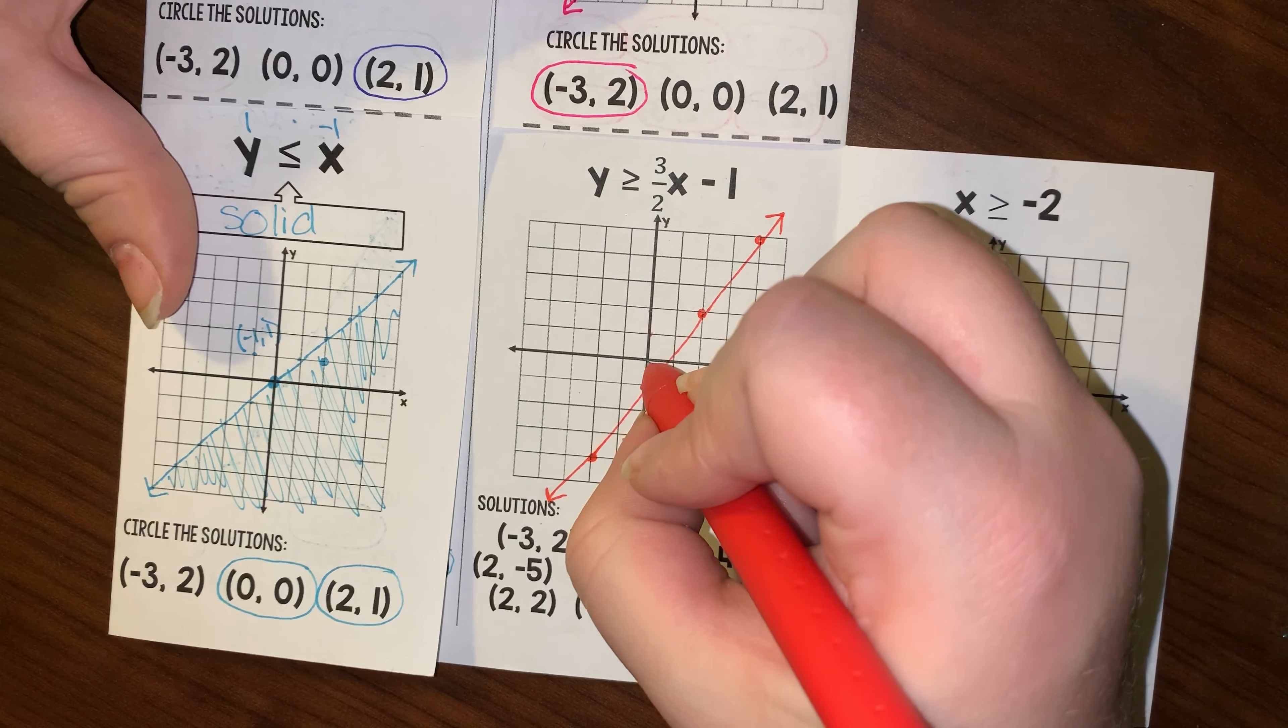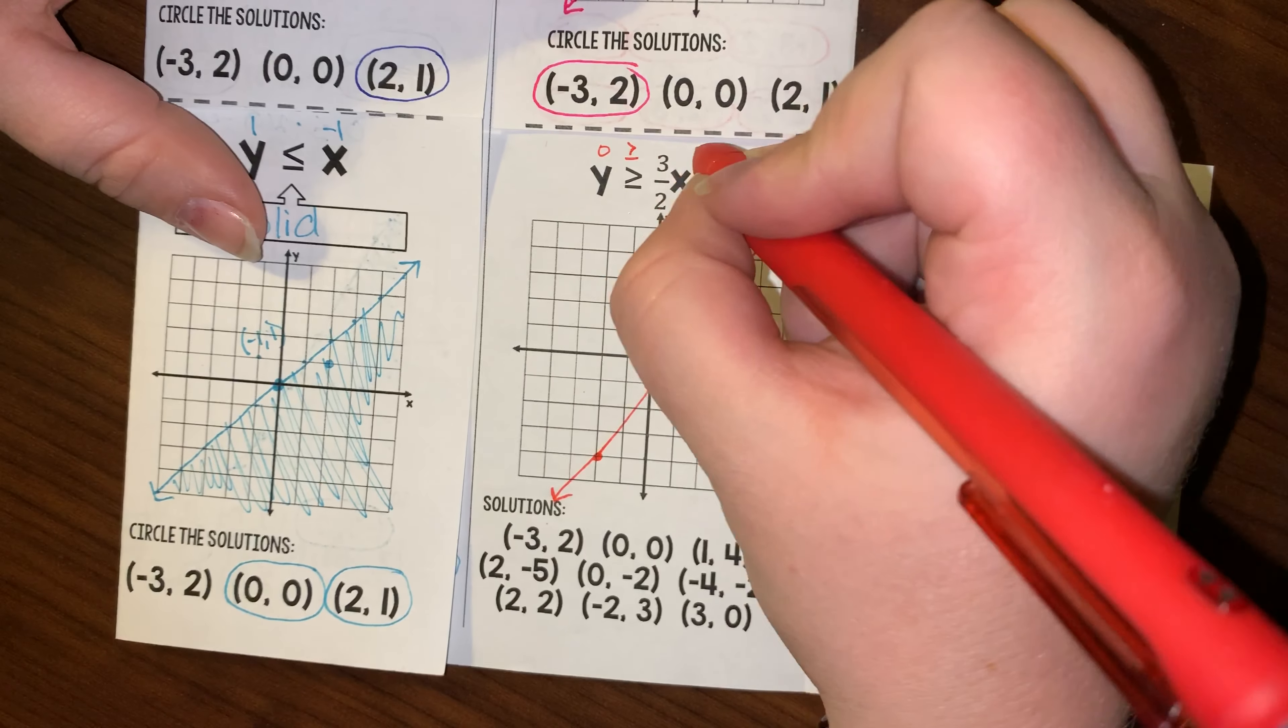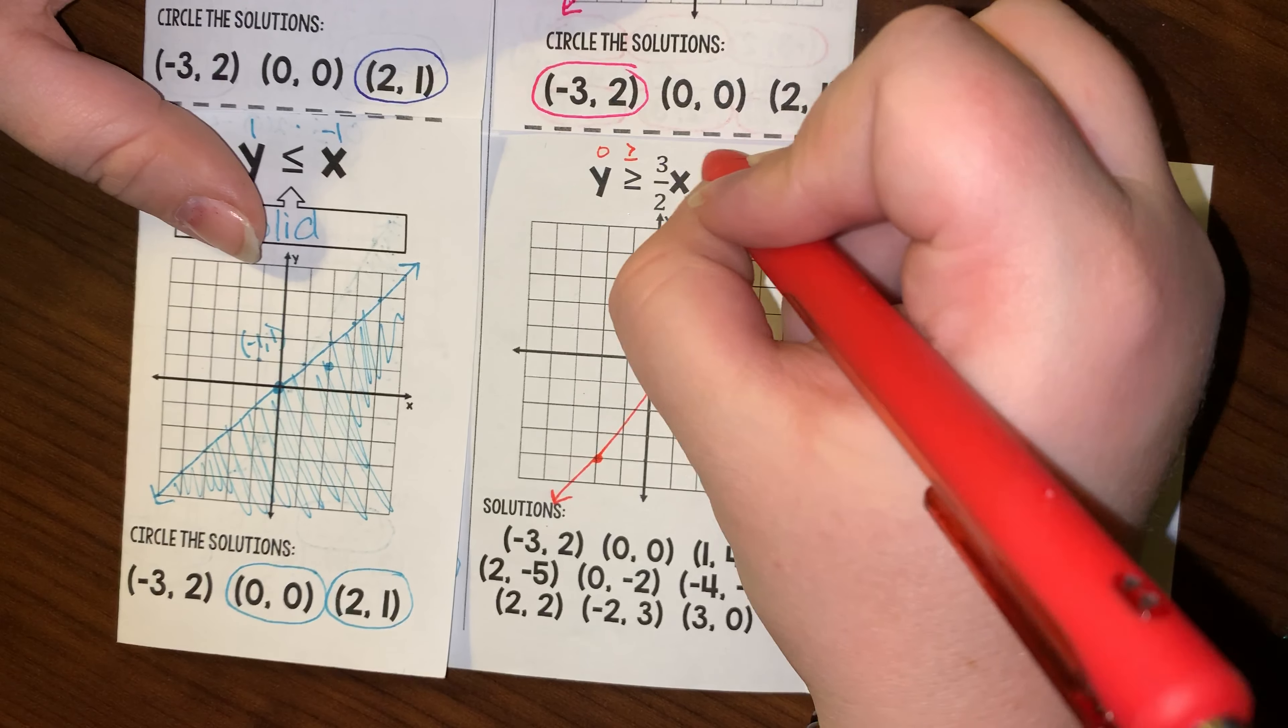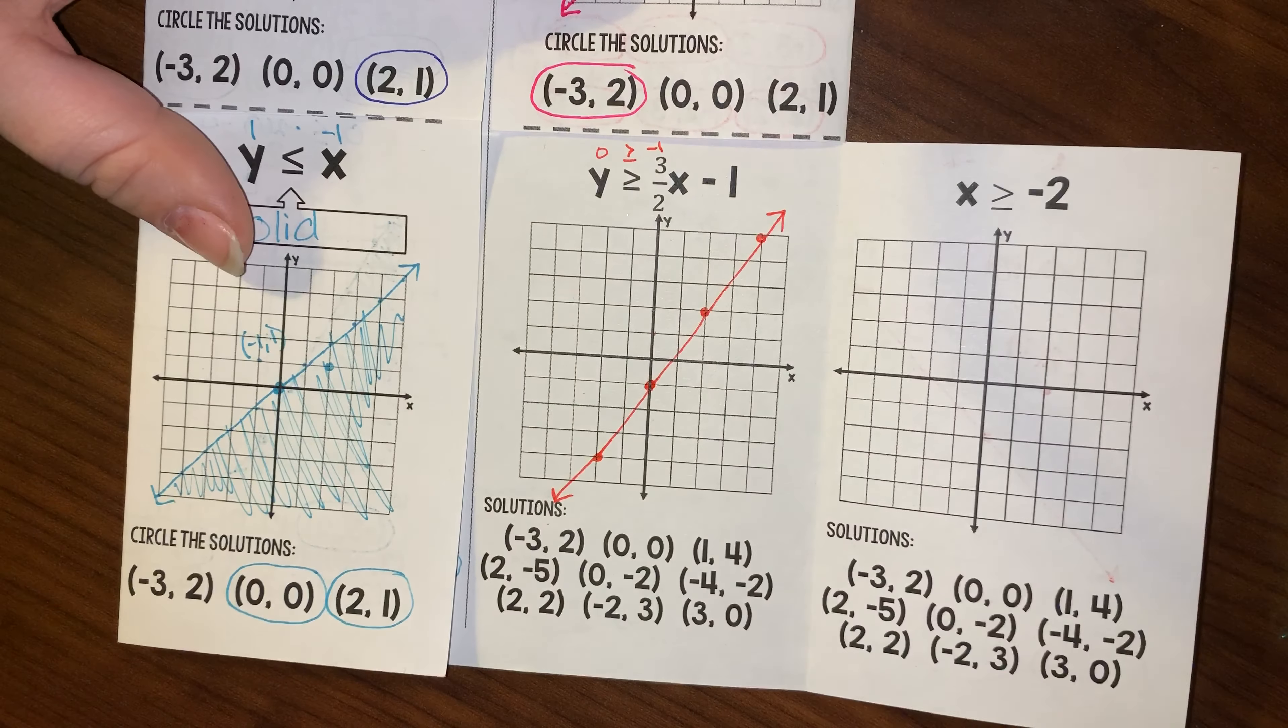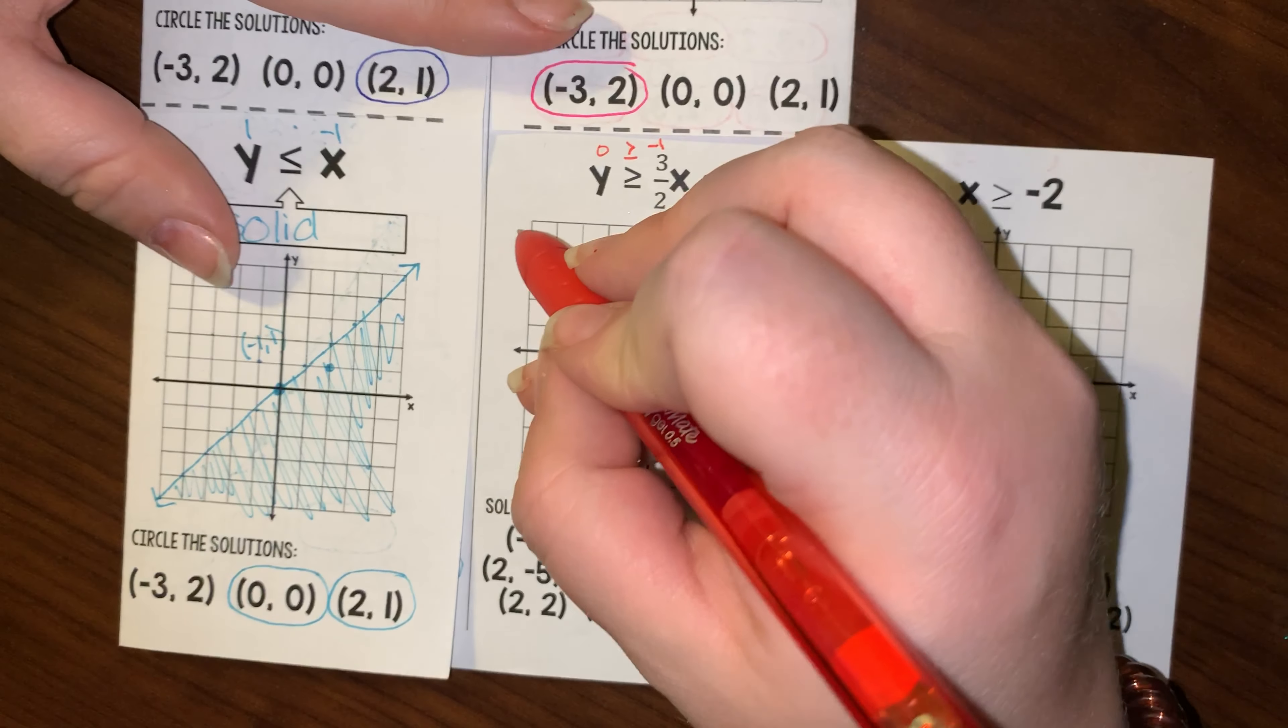Let's test 0, 0 again. So 0, is that greater than or equal to 0 minus 1, so negative 1? And it is. 0 is greater than negative 1.